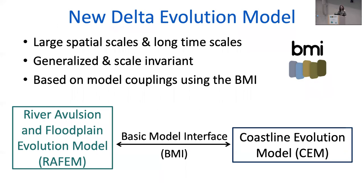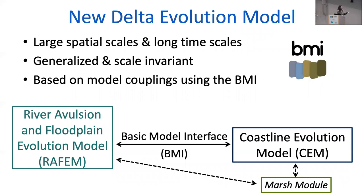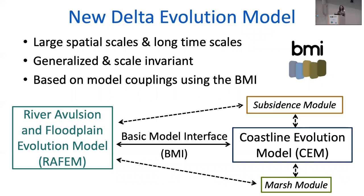So I ended up developing a new delta evolution model using the CSDMS tools. This model was designed to look at large space and time scales, and it's been generally designed — not with any particular delta in mind — but it can represent deltas with a range of fluvial and coastal processes. I'm representing everything non-dimensionally, so this model is scale invariant. I decided to base the model on couplings using the basic model interface, which I'm sure everybody's heard a lot about this week. I developed this river avulsion and floodplain evolution model — RAFM — and coupled it to a pre-existing coastline evolution model, or CEM. The nice thing about doing things through this coupling is that it allows for a lot of additional coupling, such as a marsh module or more complex subsidence module in the future.